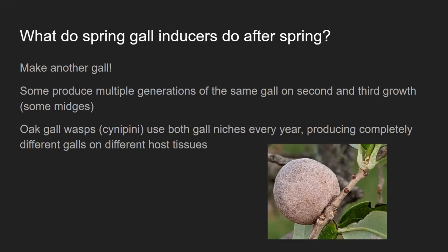The really interesting example of this strategy is the oak gall wasp, because what they do is use both the spring and the summer strategies — but on the same host. They produce completely different galls on completely different host tissues. You can see down here in the right corner: there's the little kernel gall at the bud tip, which is one generation's gall, and then the other generation made this giant bullet gall on the twig. Those are one species completing two different parts of their same life cycle every year on the same tree.